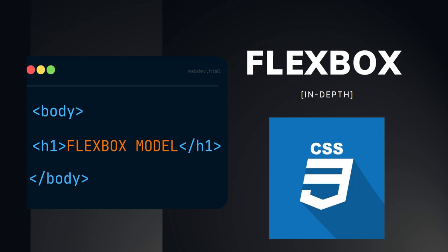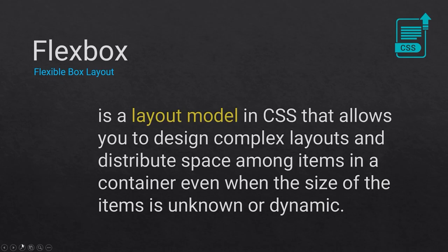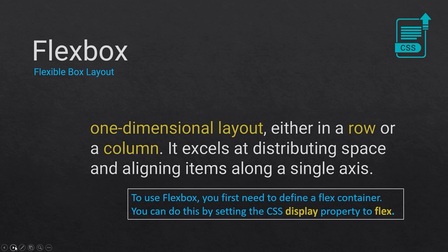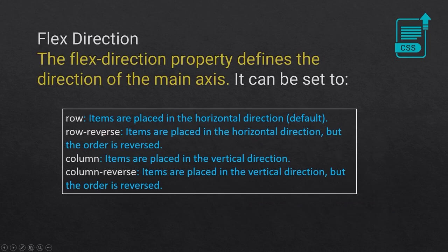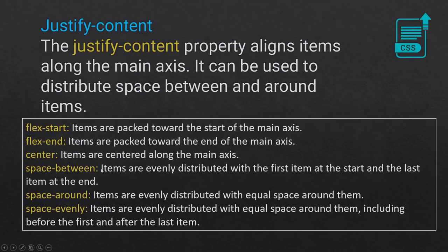In the last video we covered the introduction to flexbox as well as the first property demonstrated — flex-direction — which comes with row, row-reverse, column, and column-reverse.